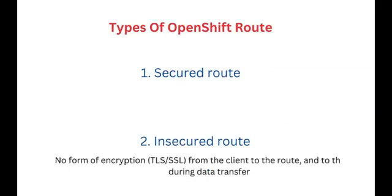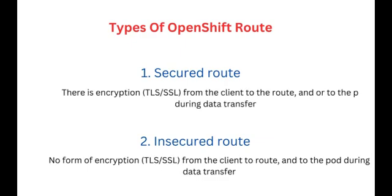Insecured routes don't perform any form of encryption when there is data transfer or traffic — no SSL or TLS certificate, so there is no encryption. Secured routes, on the other hand, encrypt the traffic from the client to the route and also from the route to the pod.